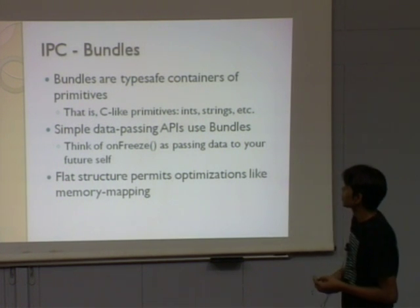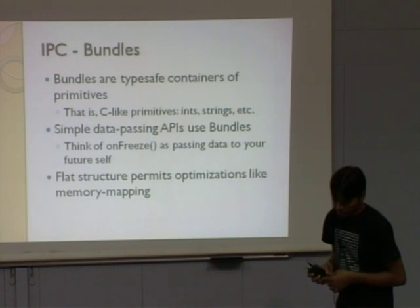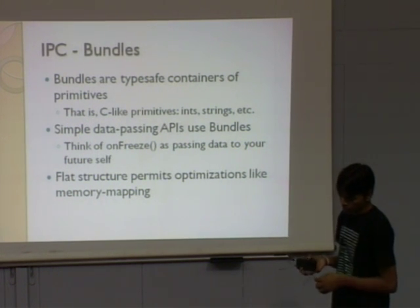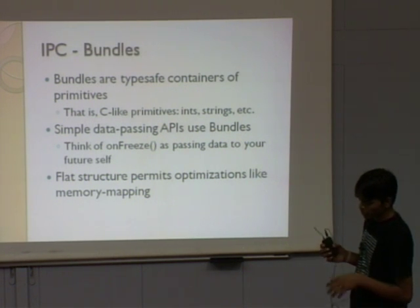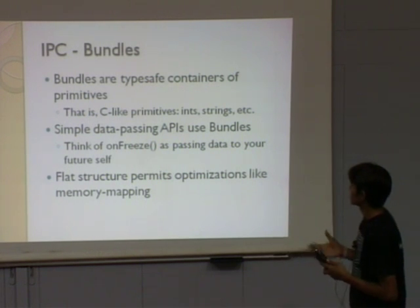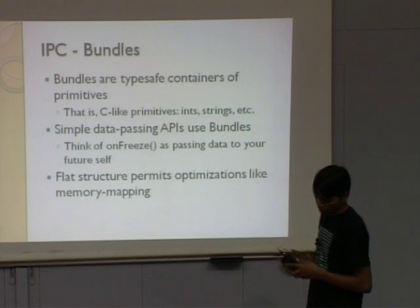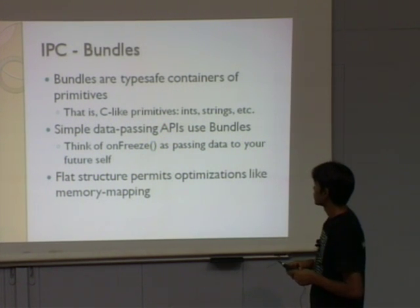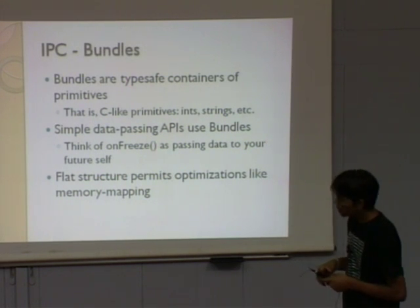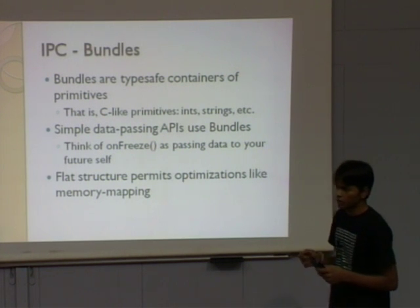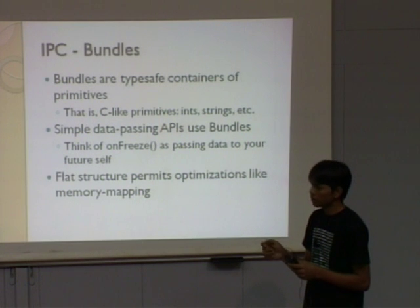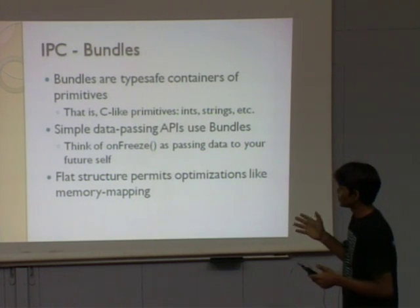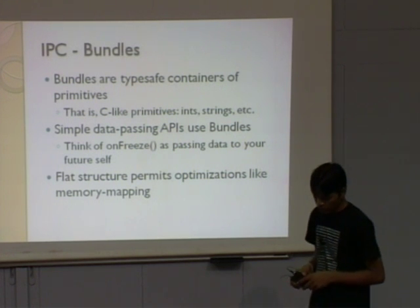IPC bundles: bundles are type-safe containers of primitives such as int, string, etc. The bundle has methods like getInt, putInt, getString, putString, which preserve the type of the data. The simple data types parsing API uses bundles. Think of onSaveInstanceState as saving data to your future self — like when you are filling a form and receive a call, you need to save that data. onSaveInstanceState handles this. The flat structure permits optimization like memory mapping.